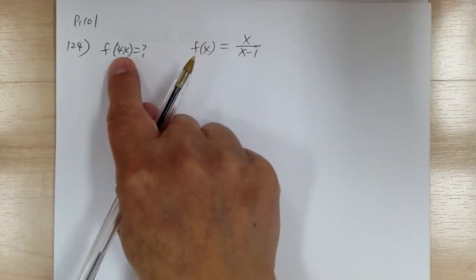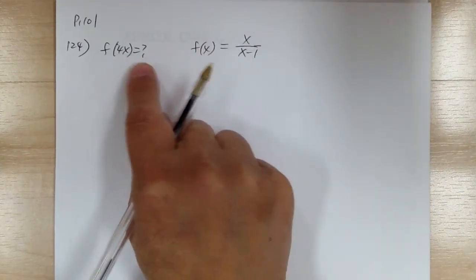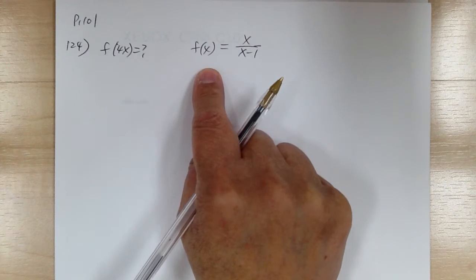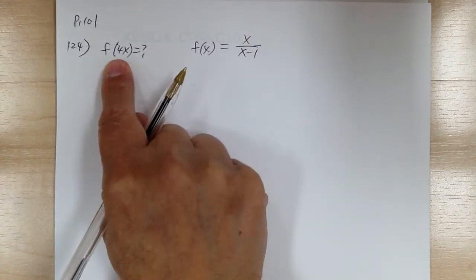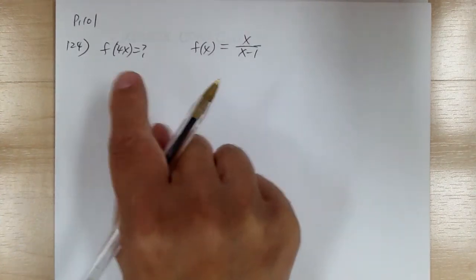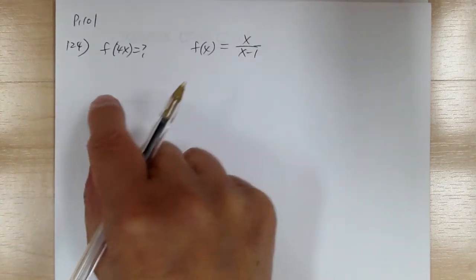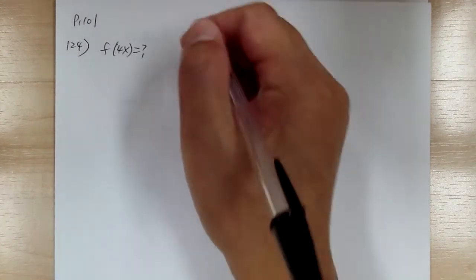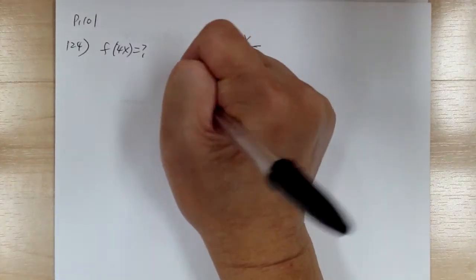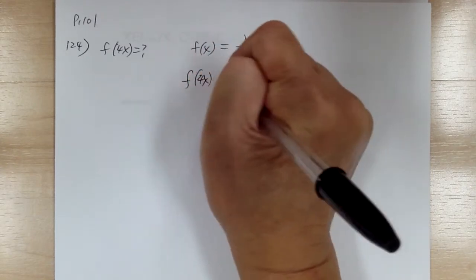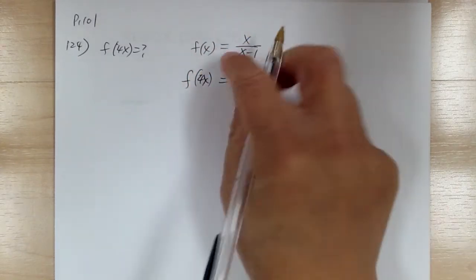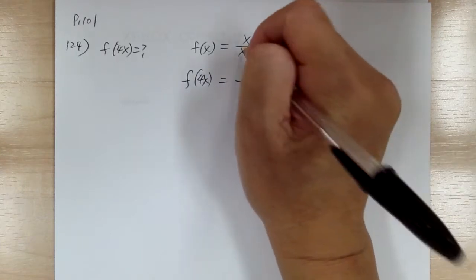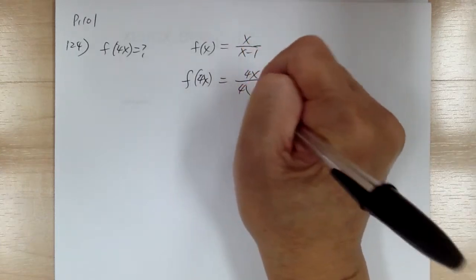Since we're looking for f of 4x, we're going to put 4x in and go straight forward. If you're given f(x) and have to look for f(4x), you can let y equal to 4x. So f of 4x will equal — whenever you see x, it becomes 4x. So x becomes 4x in the numerator and x becomes 4x in the denominator.